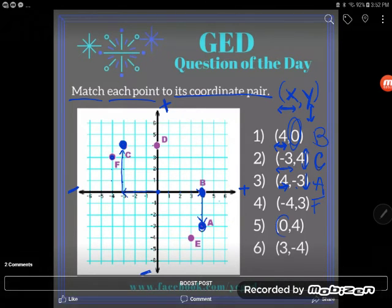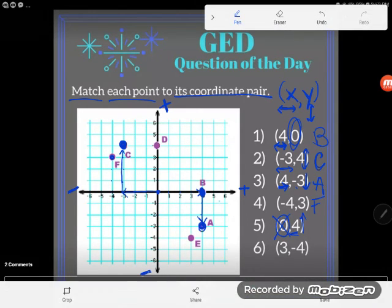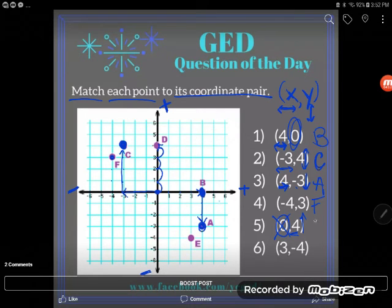Okay. Zero, four. This says make no horizontal movement. Only make a vertical movement of positive four. And so that's what I'll do. I'll just start on my origin and I'll only make a vertical movement of positive four. And so five is point D.